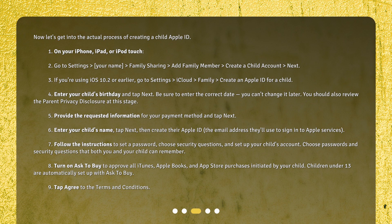You should also review the parent privacy disclosure at this stage. Provide the requested information for your payment method and tap Next. Enter your child's name, tap Next, then create their Apple ID — the email address they'll use to sign in to Apple services. Follow the instructions to set a password, choose security questions, and set up your child's account. Choose passwords and security questions that both you and your child can remember. Turn on Ask to Buy to approve all iTunes, Apple Books, and App Store purchases initiated by your child. Children under 13 are automatically set up with Ask to Buy. Tap Agree to the terms and conditions.